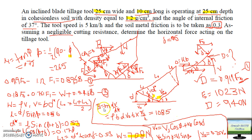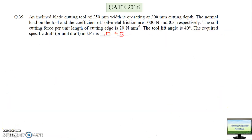Substituting B and W into the two force equations and solving for F0 gives F0 = 1023 N. Then substituting F0 into Equation 1 gives the draft D = 940 N.